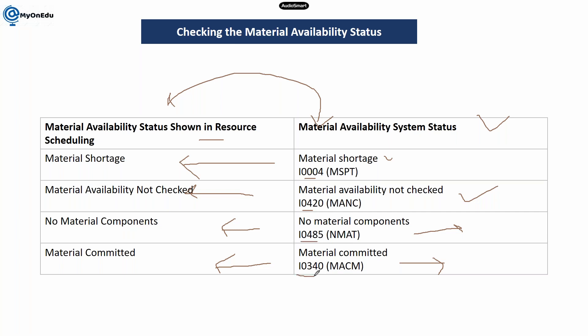These are all internally generated numbers for the system status — the code gets generated automatically. You can check it in different tables, such as SAP GY. Let us now see how it is showing us in the scheduling app.